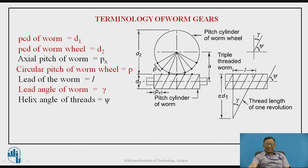The lead of the worm is shown by developing one thread of the worm — the distance covered by a point measured along the axis during one complete rotation of the worm is defined as the lead. The lead angle is calculated by developing the thread and is shown as gamma. The helix angle of the thread is psi — the angle made by the thread with the axis of rotation of the worm is called the helix angle.